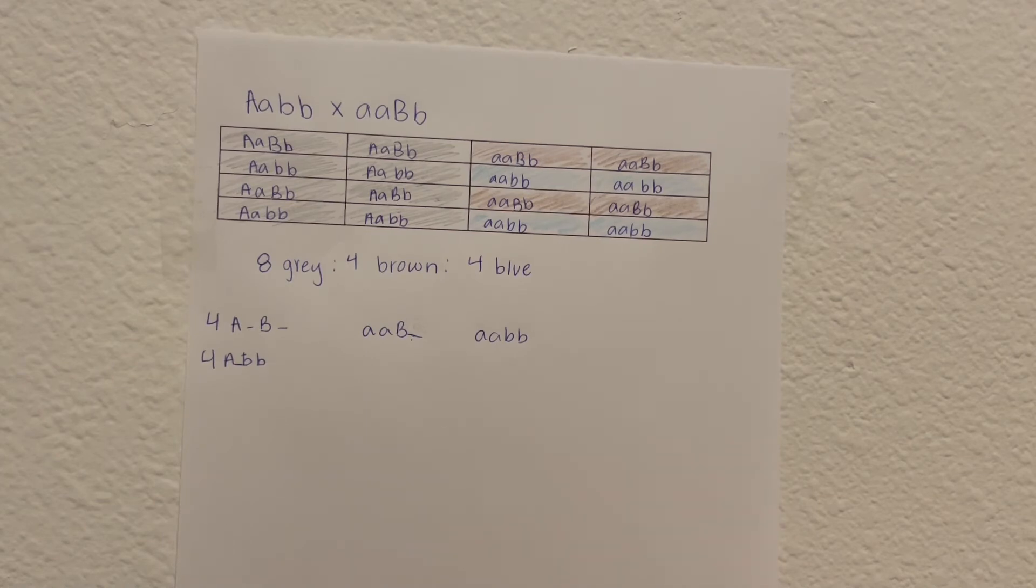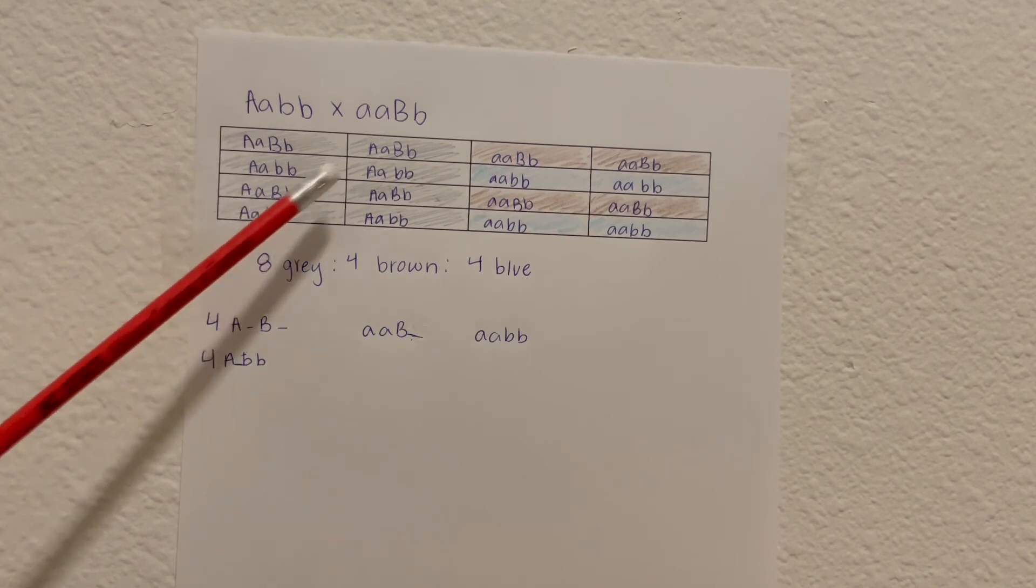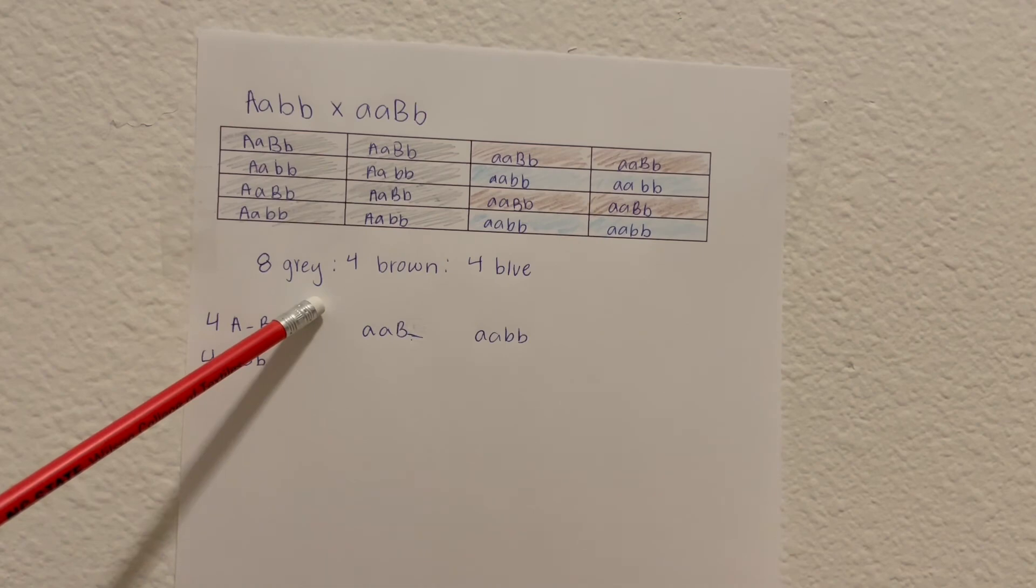So as you can see here, all of the offspring that would inherit the capital A gene are all going to be that gray color because the capital A cancels out any other trait that could show up.